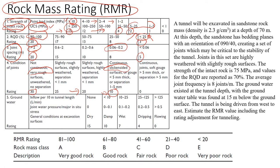Another important factor is groundwater. There are three different ways to assess it: inflow in the tunnel in liters per minute; joint water pressure divided by major in-situ stress; or sometimes we just look at general conditions — whether it's dry, damp, wet, dripping, or flowing. Based on the water conditions, we assign a rating. If we have a dry rock mass with no water pressure, the rating will be high. If there is lots of water, the rating for this component will decrease.